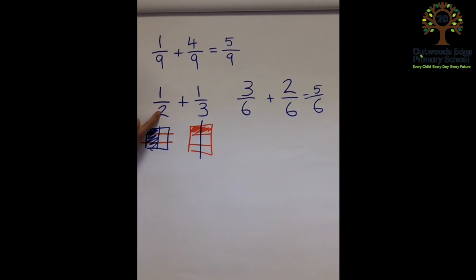And then whatever we do to this number, we must do to this number. And I've got a bit of an action that helps the children remember that. So this number here, if you remember, we times that by three. So that's what we do to the number at the top. And you can see over here we've got three sixths.